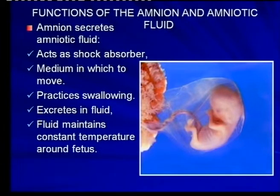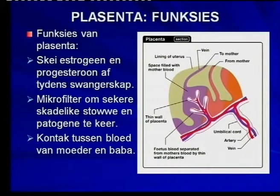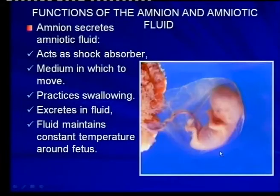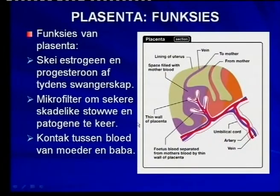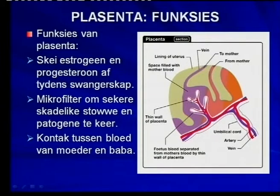The placenta is also a very important structure. You can clearly see the placenta, the umbilical cord, and the amniotic fluid. Here you've got the placenta — a picture of the placenta. This drawing shows you fetal blood vessels and the mother's blood. Can you see that there is definitely no direct contact between the two?